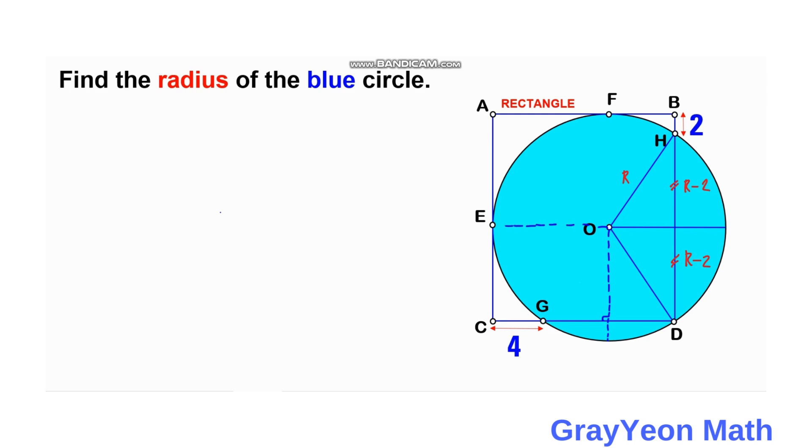Since this is the radius R, so if we deduct 4, we subtract 4, then this length is actually R minus 4. And since this is a perpendicular bisector, then this is R minus 4, and we can actually draw this segment OG.